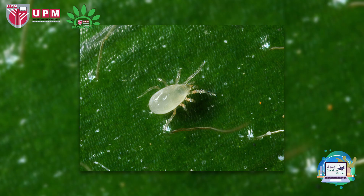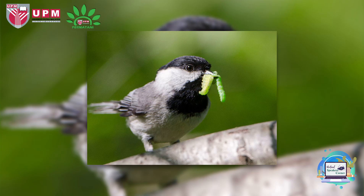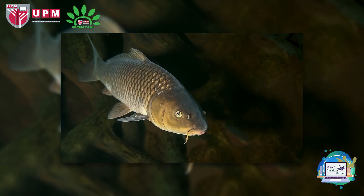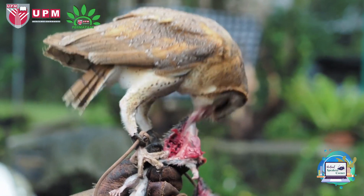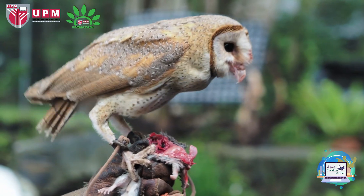Predatory mites feed on small insects like spider mites, thrips, and white flies. Certain bird species such as swallows and bluebirds feed on insects and can help control pest populations. Some fish such as tilapia and carp can be used to control mosquito larvae in ponds and other bodies of water.